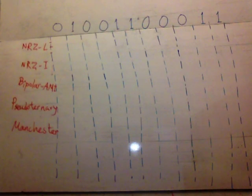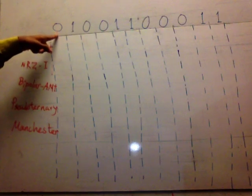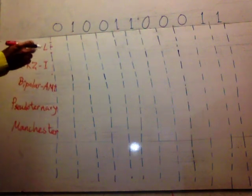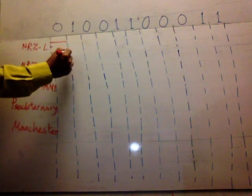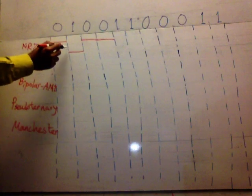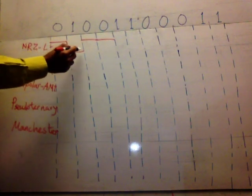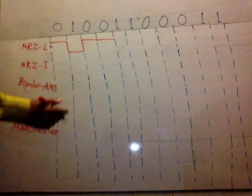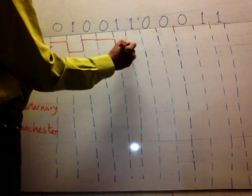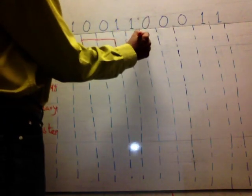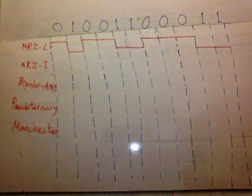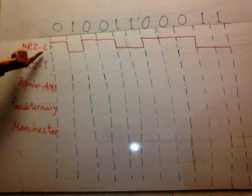Non-return to zero L means: when you have zero data, you encode high level voltage; when you have one data, you encode low level voltage. So zero is high level, one is low level. When you have multiple consecutive levels, you have to connect them to show transition. That's how you encode digital data into digital signal using the NRZ-L technique.